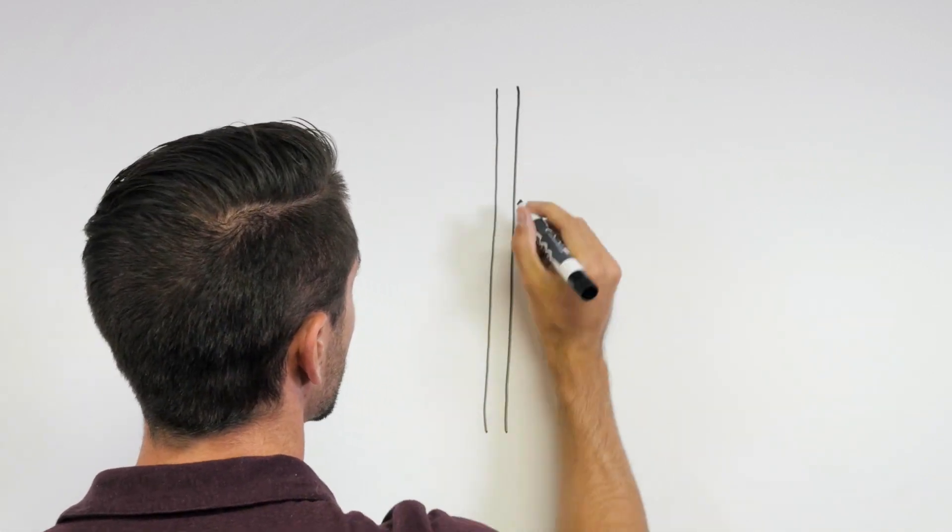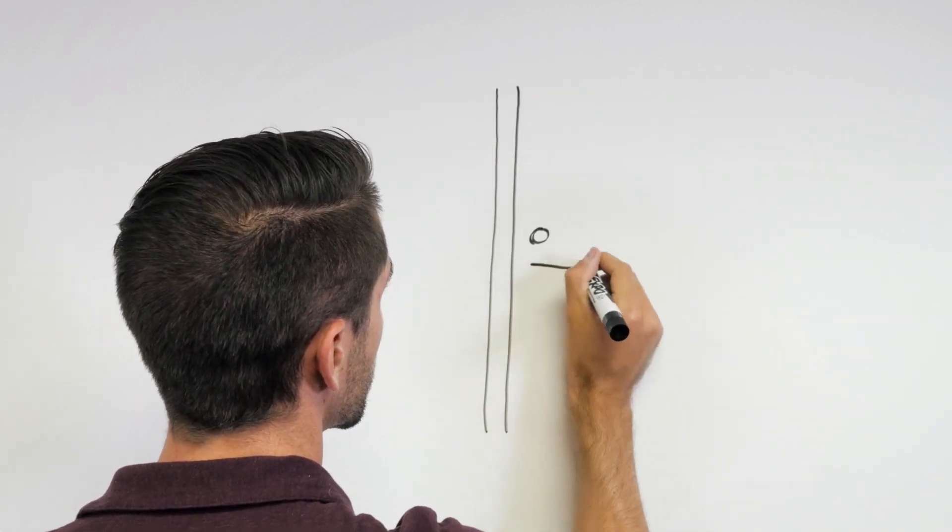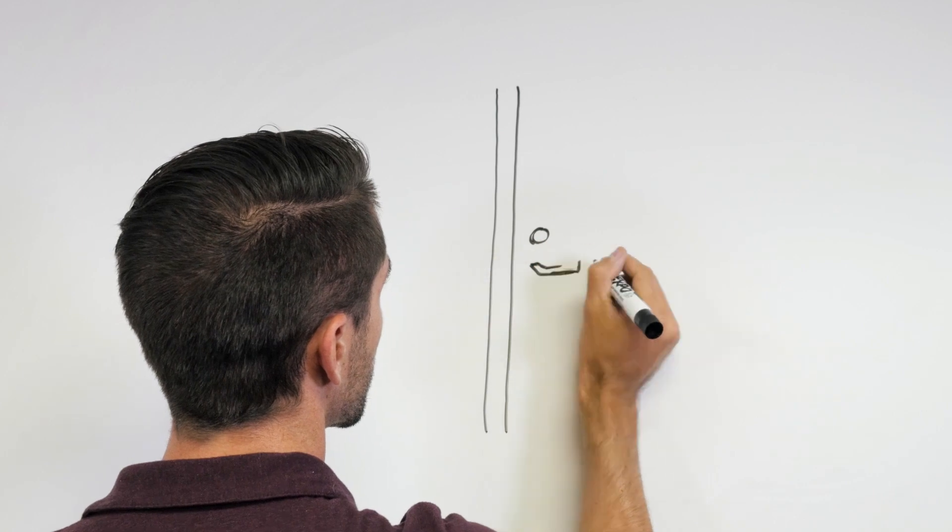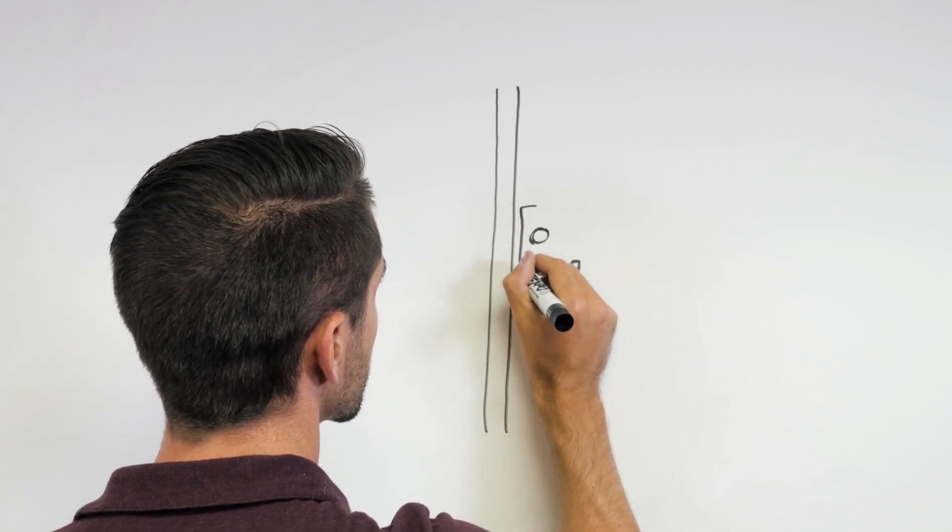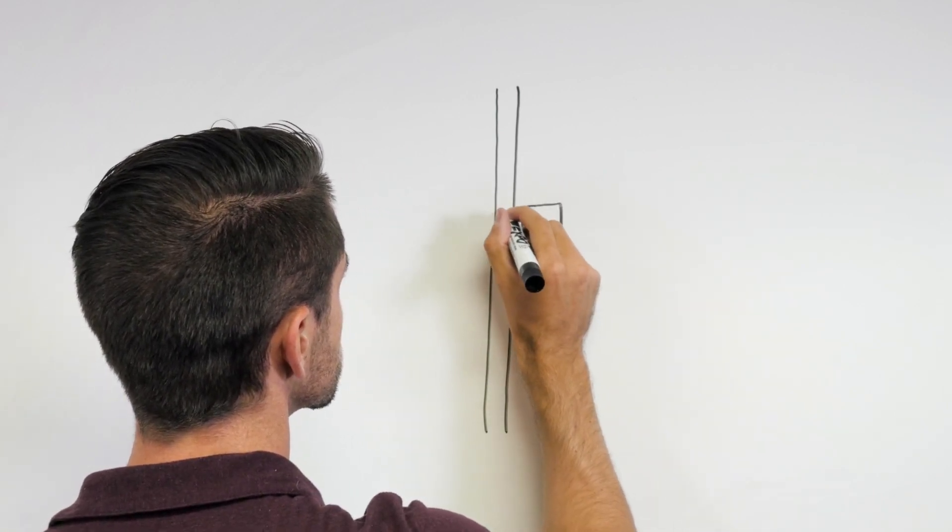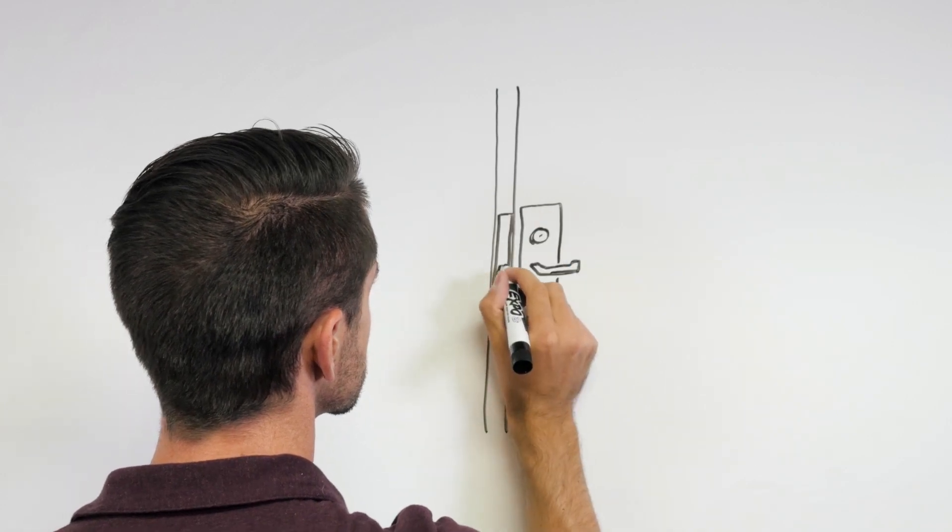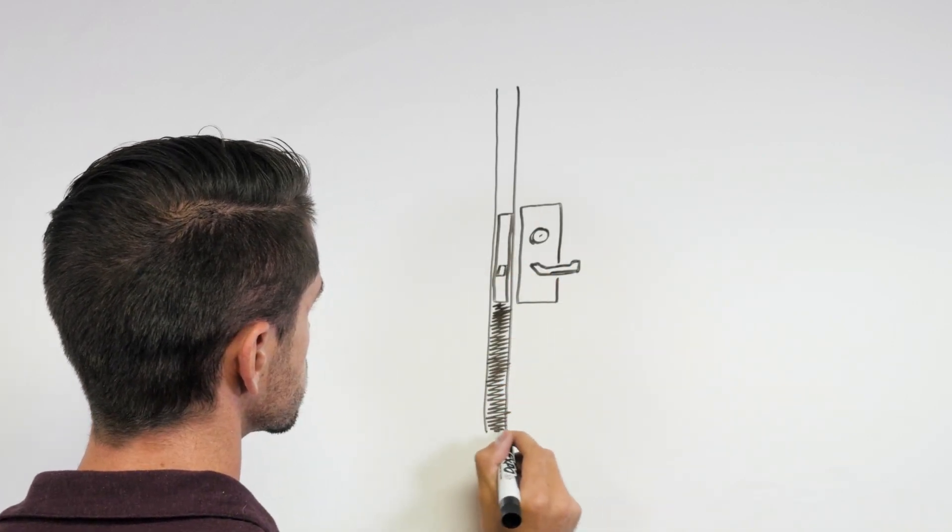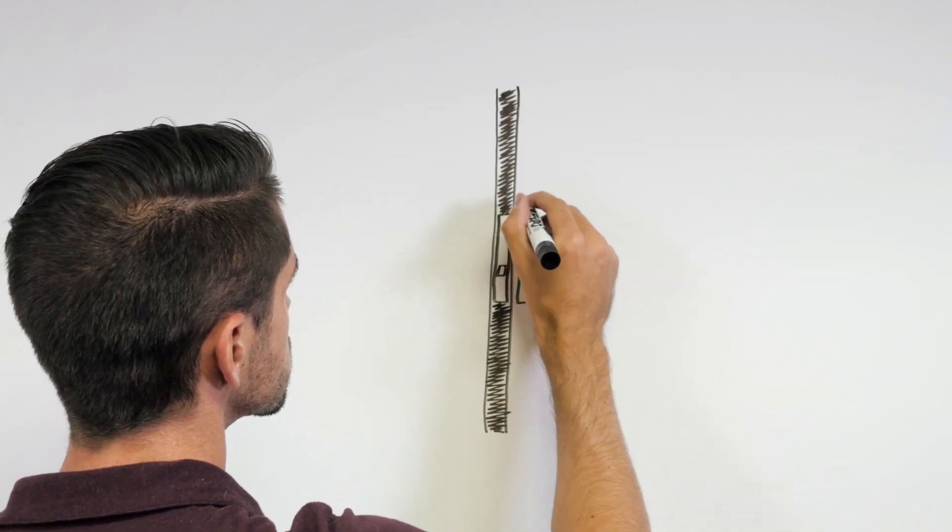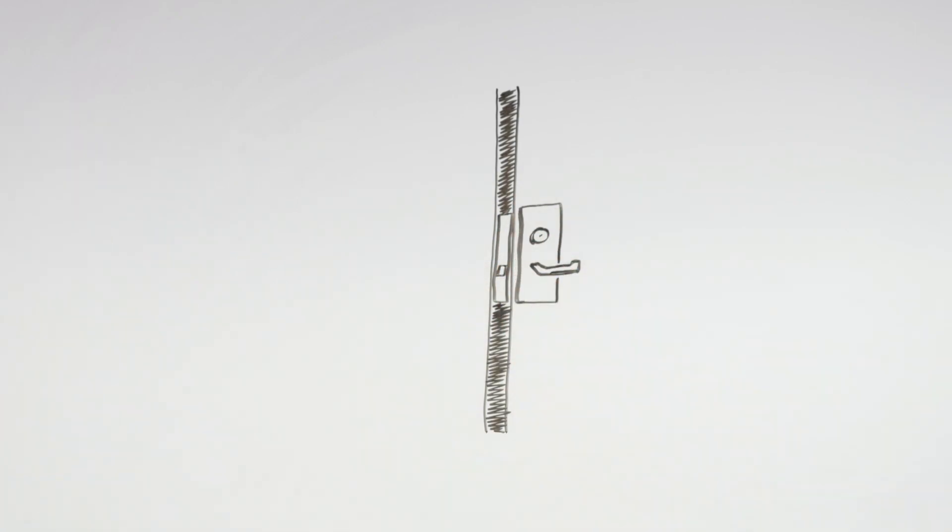Next, let's look at a few common products designed to be either fail secure or fail safe. Many mortise and cylindrical lock sets can be electrified to control access from the key side. Most electromechanical lock sets provide for free egress, meaning one can go out of the door at all times.